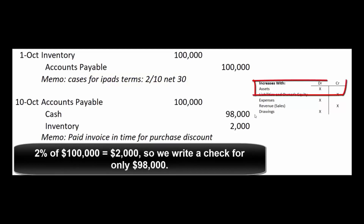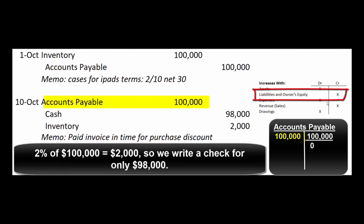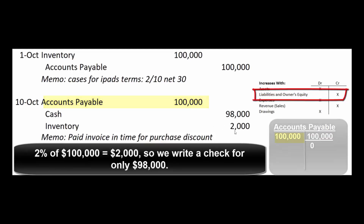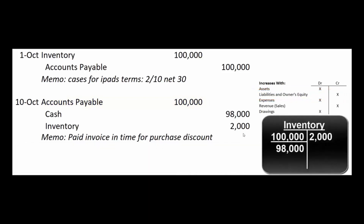Cash is an asset — it increases with debits and decreases with credits. We take that account payable off our books; it's a liability account, so it increases with credits and decreases with debits. And that $2,000 that we got to reduce our bill by, we'll use that to reduce the cost of our inventory, because after all, our inventory only costs us $98,000, not $100,000.